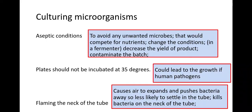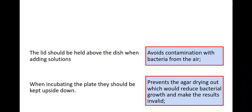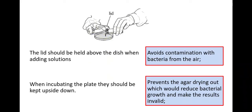The reason you flame the neck of the tube before transferring your bacterial sample onto the plate is that it causes the air to expand, pushing bacteria away so they are less likely to settle into the tube. It also kills any bacteria or microorganisms around the neck of the tube. Additionally, the lid should be held just above the dish when adding any solutions into your petri dish, because there are microorganisms in the air that you don't want contaminating your sample.